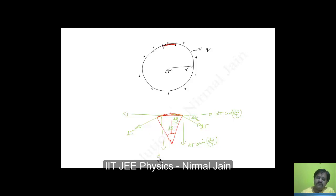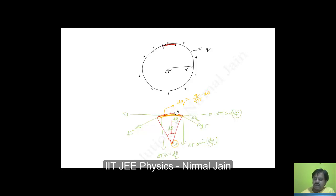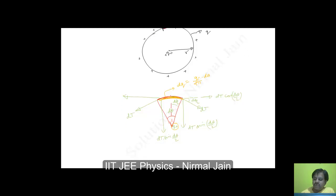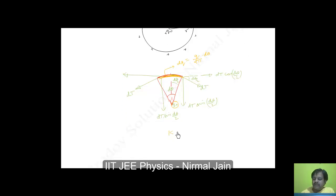We know that q₀ is kept at the center of the ring, and this part of the ring is having some charge. The total charge q is spread over angle 2π, so the charge in the dθ angle will be equal to q·dθ/(2π). This elemental charge and q₀ must have a repelling force acting outward, which must be balanced by the components of the incremental tension dT, giving 2·dT·sin(dθ/2).